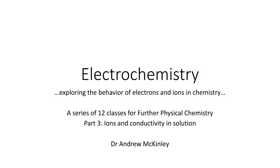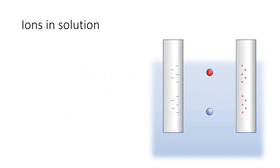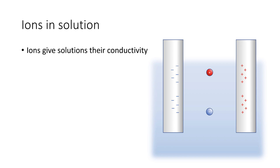We've looked at solvents, and now we need to look at the behaviour of ions in solution. Remember we just find a few basic terms: our ions, our cations, cathode, anions, anode, but fundamentally ions are what give solutions their conductivity. Whenever we think of a current flowing in a solution, we have to visualise it as a flow of ions, not as a flow of electrons.